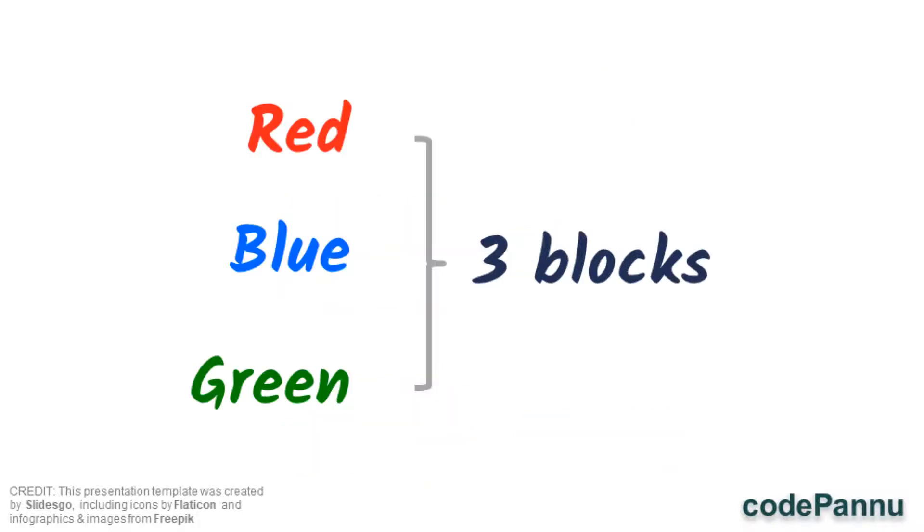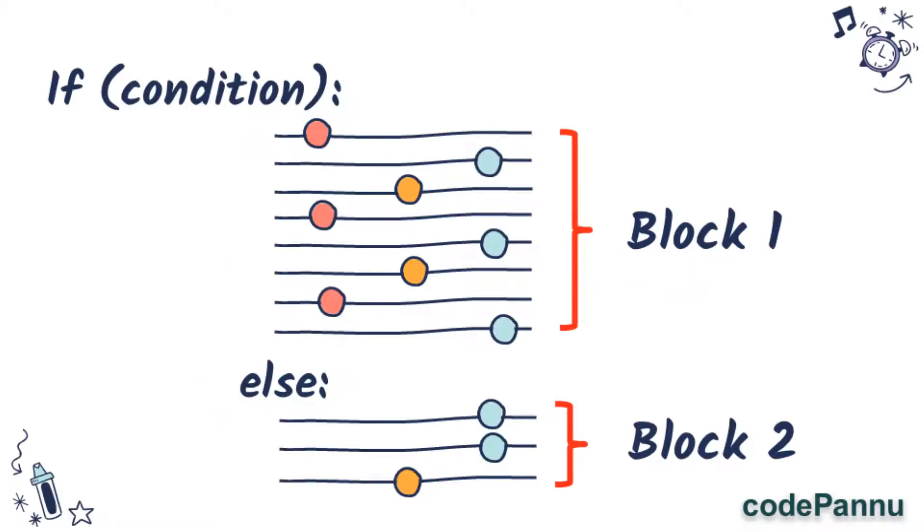And if someone picks green or yellow, they are in the green team. So now we have three groups, which means we have to write three blocks for three possible actions. A person can become part of the red team, which is one, blue team, which is two, or green team, which is three.